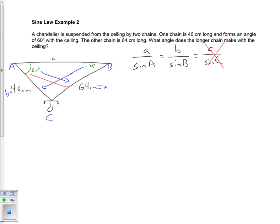We do however have values for three of the four other pieces remaining in this ratio. We know that side length a is 64 centimeters and angle A is 60 degrees. We know the length of side b is 46 centimeters. We don't know what sin B is - that's what we're trying to figure out.